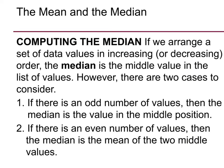The next measure of center is the median. The median is another word for the middle of a data set, but it's not the average — it's the actual middle value in the list. The data must be in increasing or decreasing order. If there's an odd number of values, the median is the value in the exact middle position. If there's an even number of values, the median is the mean of the two middle values — add them and divide by two.